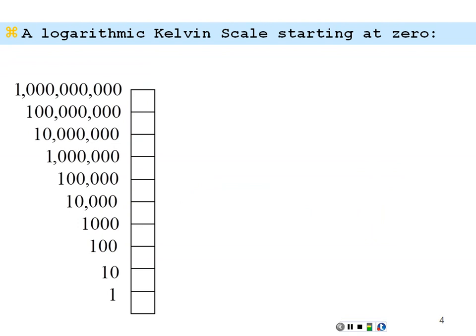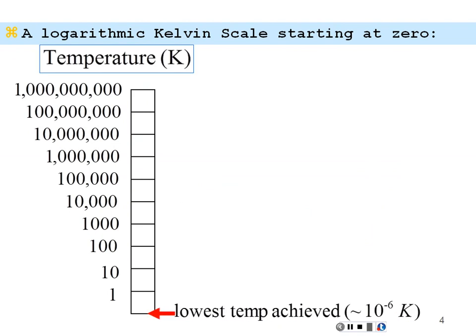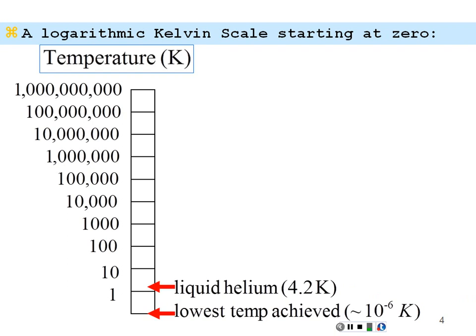Here's a logarithmic Kelvin scale starting from zero. The lowest temperature achieved is about one millionth of a degree Kelvin. Liquid helium is 4.2 degrees Kelvin. If you take liquid helium and evacuate the atmosphere above the liquid helium, you force molecules to leave the liquid, taking energy into that vacuum. You can cool the liquid helium down further as it loses energy to the gas, getting it down to 1.6 Kelvin — I've done that before.